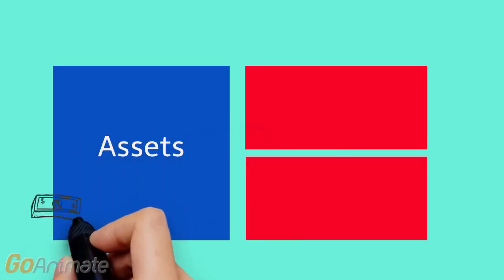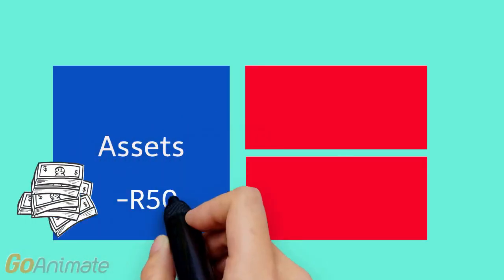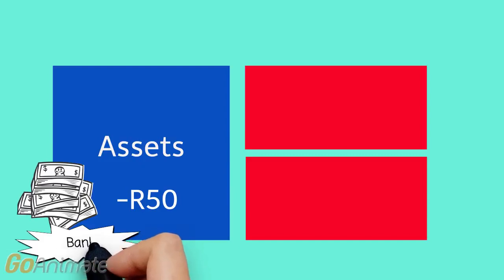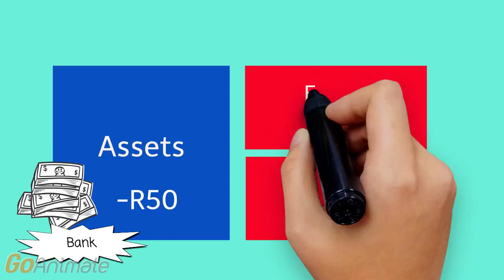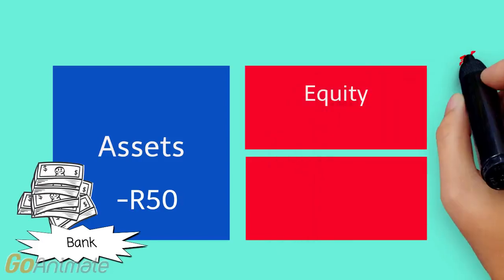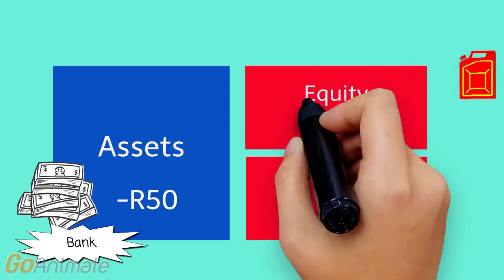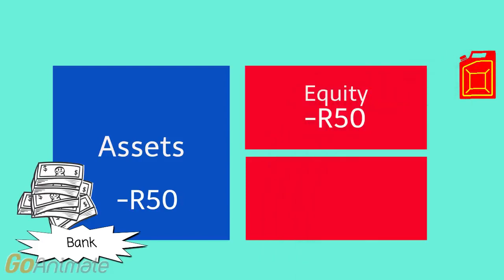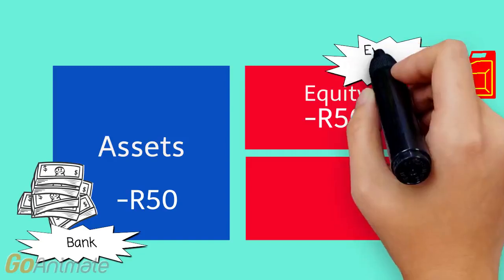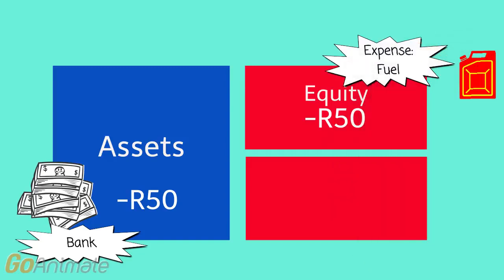Nandi has spent 50 rand buying petrol, which means that her bank account balance has reduced by 50 rand. She spent the 50 rand on petrol for her lawnmower — this is an expense of her business. She had to spend this money to be able to mow the friend's lawn.